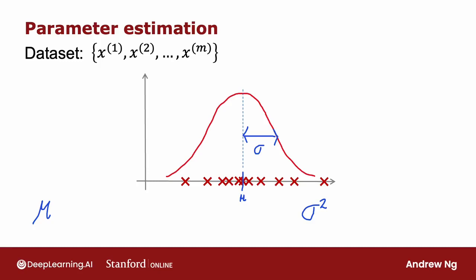The way you would compute mu and sigma squared mathematically is our estimate for mu will be just the average of all of your training examples. So it's 1 over m times sum from i equals 1 through m of the values of your training examples. The value we would use to estimate sigma squared will be 1 over m times the average of the squared difference between the examples and that mu that you just estimated here on the left.